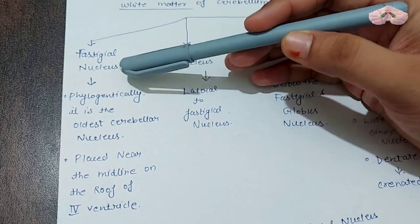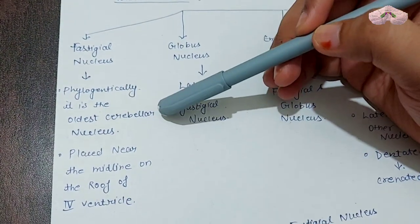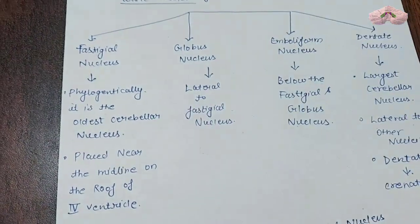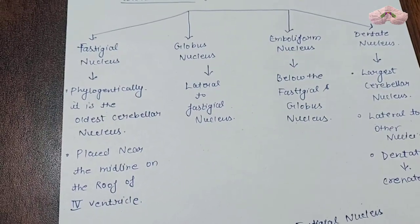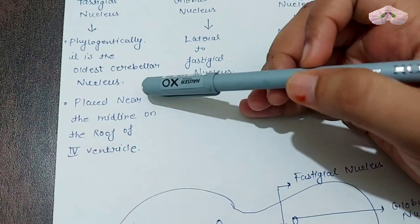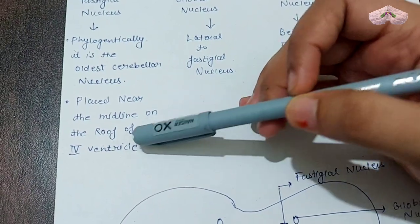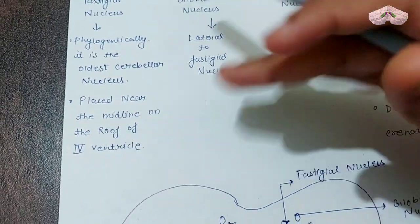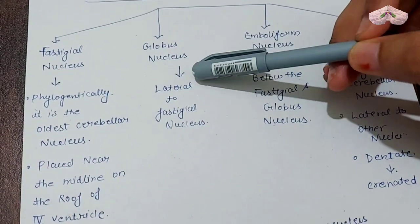The first one, the fastigial nucleus, is the oldest cerebellar nucleus. This nucleus is placed near the midline on the roof of the fourth ventricle.